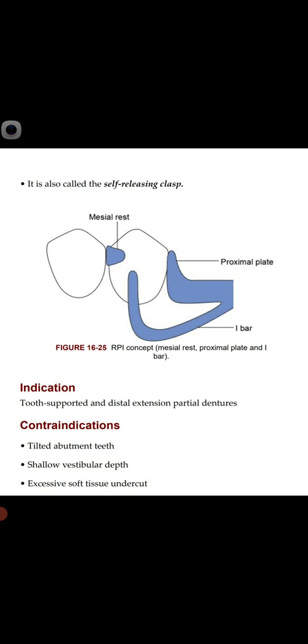The RPI concept is indicated in tooth-supported and distal extension partial dentures. There are three contraindications: number one, tilted abutment teeth — we cannot give RPI concept because of the I-bar; number two, shallow vestibular depth, because the I-bar is also known as the gingivally approaching clasp; and number three, excessive soft tissue undercut, which is also a contraindication of the gingivally approaching clasp or I-bar clasp present in the RPI concept.